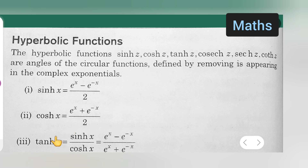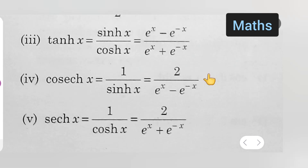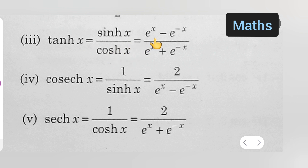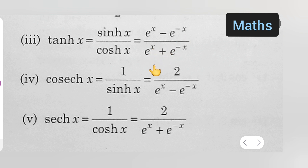The third one is tan hyperbolic x, which is equal to sine hyperbolic z upon cos hyperbolic z, which is equal to e raised to the power of x minus e raised to the power of minus x, upon e raised to the power of x plus e raised to the power of minus x.